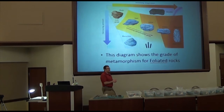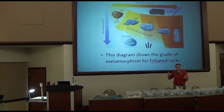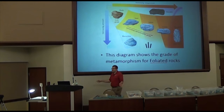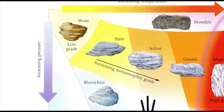Another thing we look at is the grade of metamorphism — how much has the rock been changed, how much heat and pressure it has undergone. If it's low grade, it hasn't changed very much. For foliated rocks, you might start with shale, a sedimentary rock, add some pressure, and that would form slate. They look pretty similar, so that's pretty low grade.